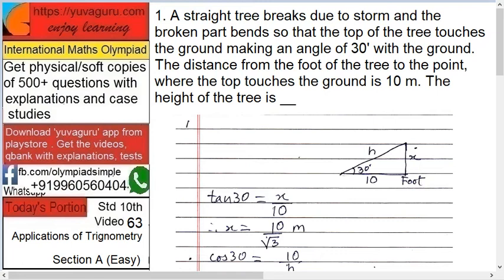A straight tree breaks due to storm and the broken part bends so that the top of the tree touches the ground making an angle of 30 degrees with the ground. The distance from the foot of the tree to the point where the top touches the ground is 10 meters. Then the height of the tree is?